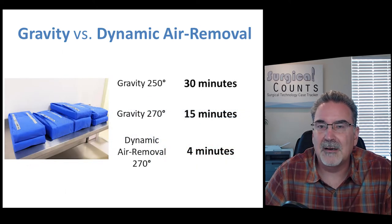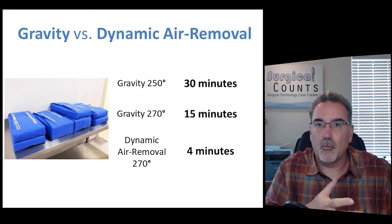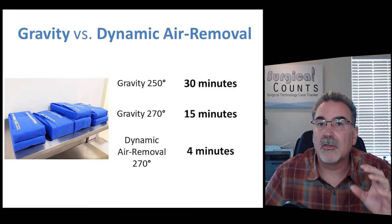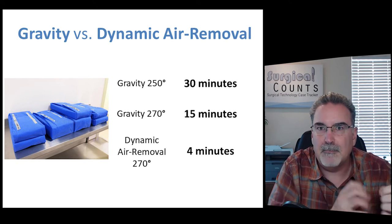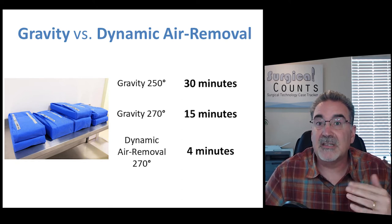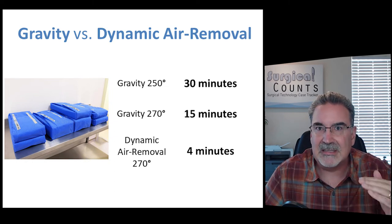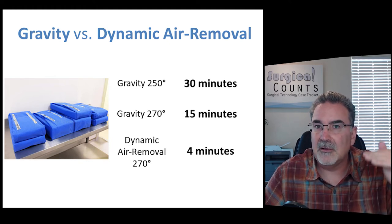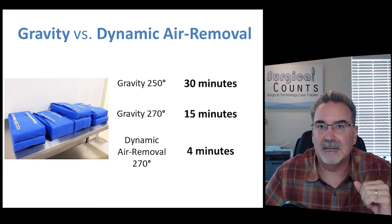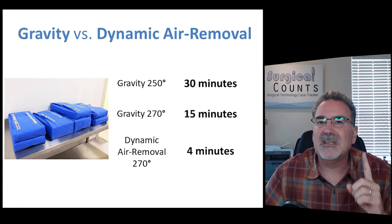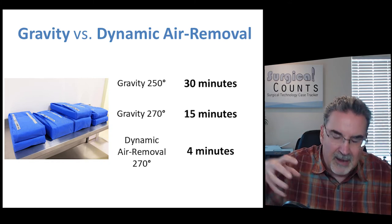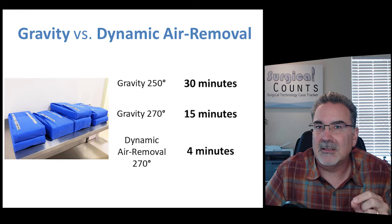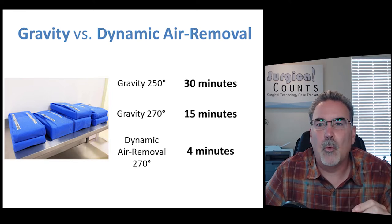Just how much can dynamic air removal speed up the process? If you have wrapped packs of instruments, you would have to put them into a gravity sterilizer at 250 degrees for 30 minutes for the steam to penetrate those wrapped packages. Just increasing the temperature by 20 degrees up to 270 degrees — the standard — you can reduce that time by half, down to 15 minutes. But using dynamic air removal, where we're sucking the old air out, pressurizing it with steam, then sucking that old steam out and pressurizing with new steam, that process can cut the sterilization time down to 4 minutes.